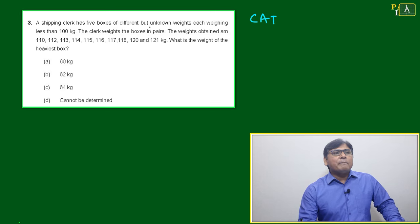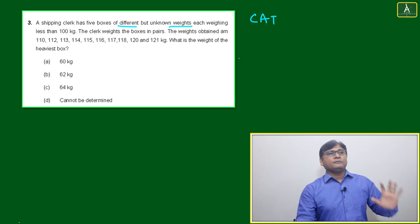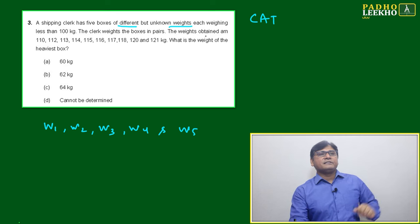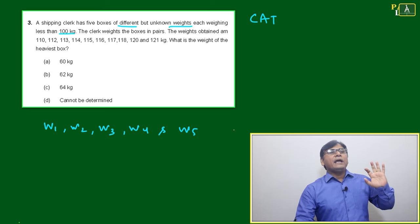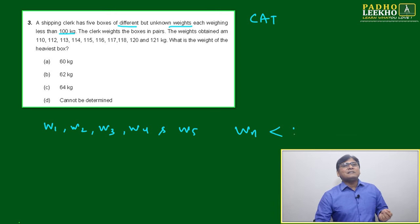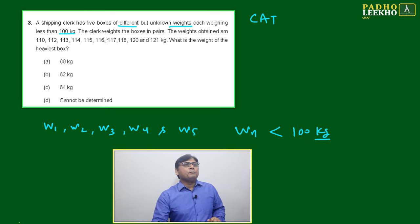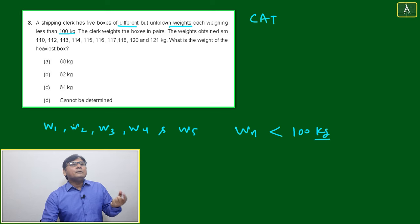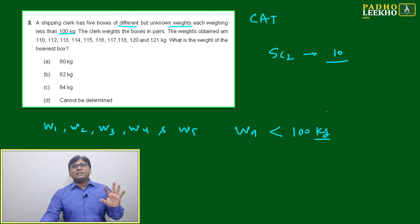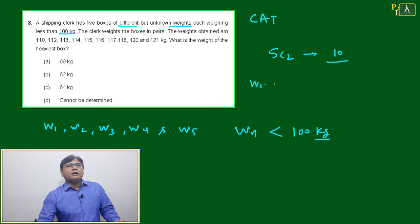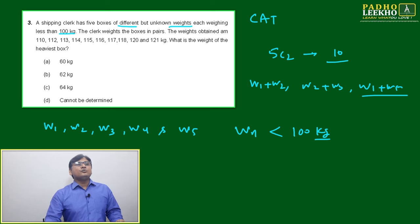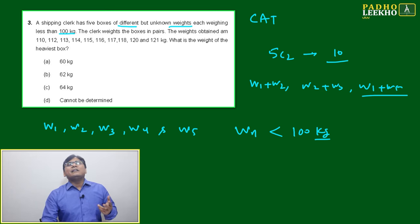Question number three: A shipping company has five boxes of different but unknown weights. Each box weighs less than 100 kg. The company weighs the boxes in pairs — any two boxes together — which gives 5C2 = 10 different combinations. So we will get 10 different pairwise sums: w1+w2, w2+w3, w1+w5, and so on — a total of 10 combinations.